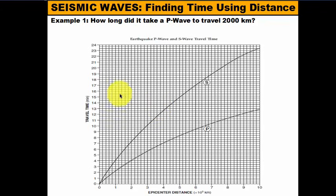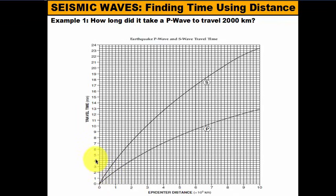On the graph, you have your y-axis and your x-axis. Your y-axis is travel time, which is in minutes — so every number here is a minute: one minute, two minutes, three minutes, four minutes, and so forth. Down here we have the distance to the epicenter, or distance away from the epicenter, and this is going to be broken up into kilometers or thousands of kilometers.